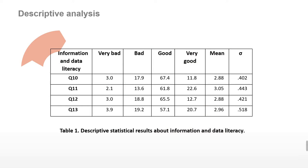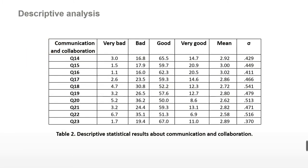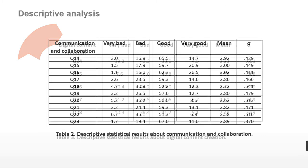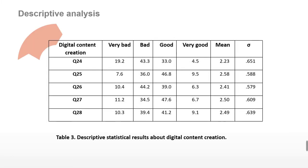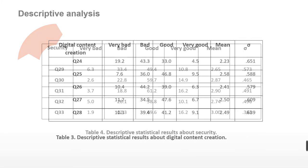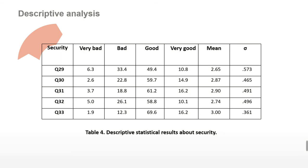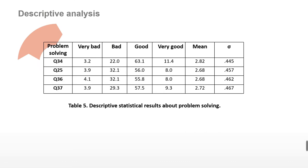According to Table 1, we can see that teachers' digital competence in information and data literacy was, in general, quite positive. This is the results about communication and collaboration. Moving on to digital content creation, we can see that teachers didn't think they did a good job in this section. Here are some results about security, and finally we have results about problem solving.